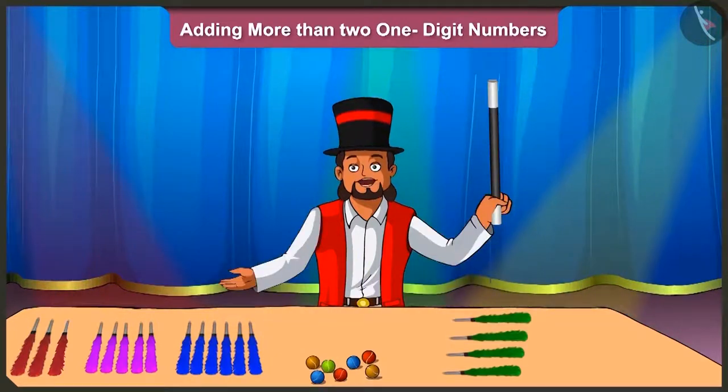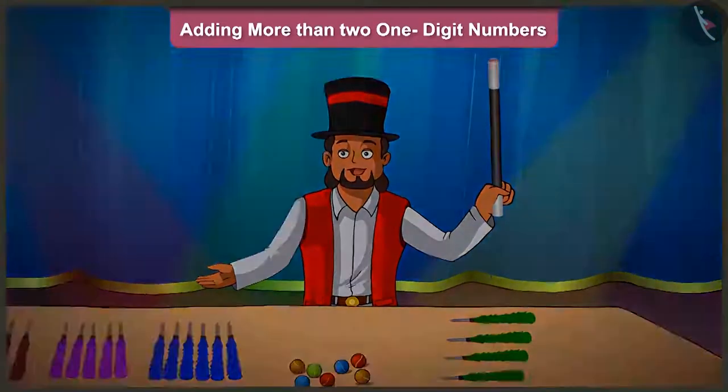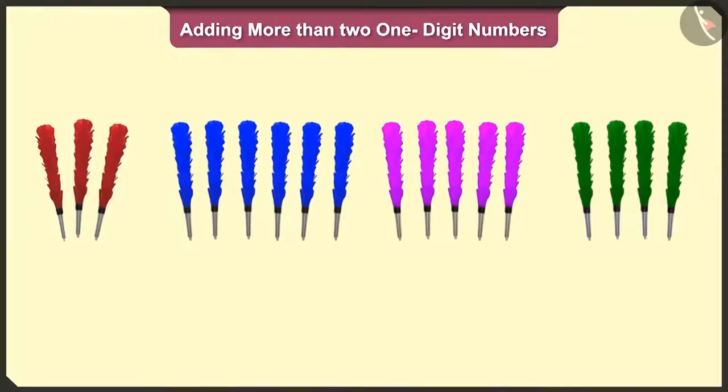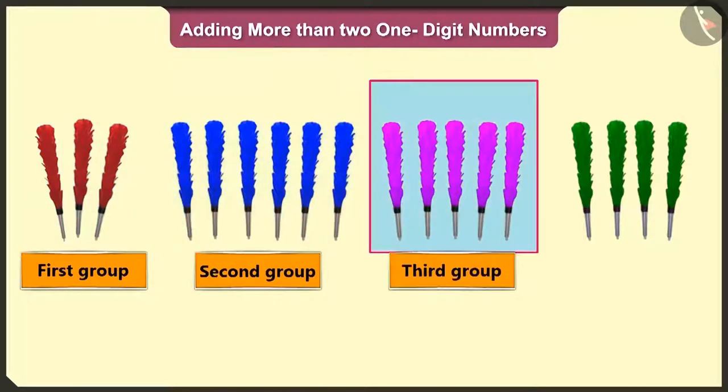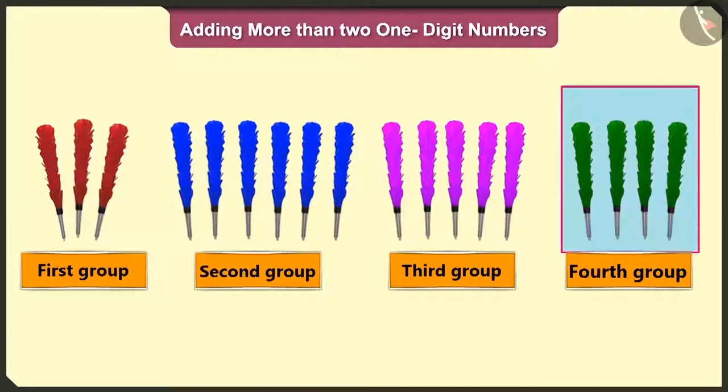Big hands. See, Pillu, this magician has three sticks in the first group, six in the second, five in the third and four in the fourth group.